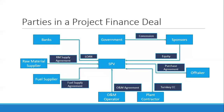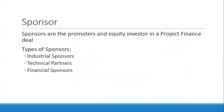In the previous video, we showed the different parties in a project finance deal. We'll now define some of these so that we have a common language. When we talk about the sponsor, the sponsor is the promoter and equity investor in a project finance deal who provides the necessary capital for the project. Usually there are three types of sponsors: industrial sponsor, technical sponsor, and financial sponsor.